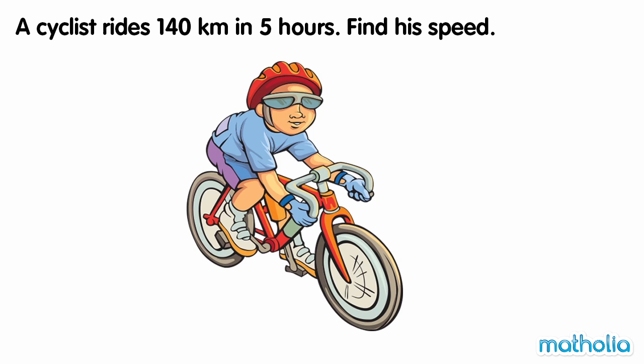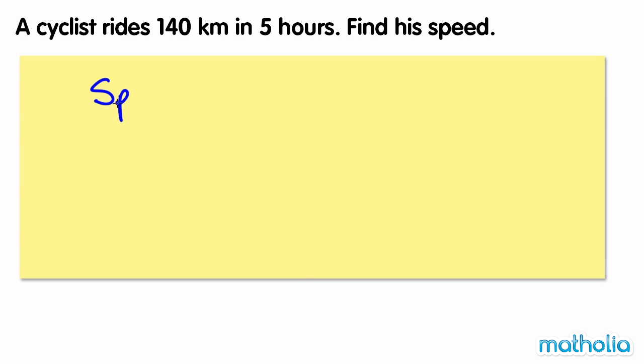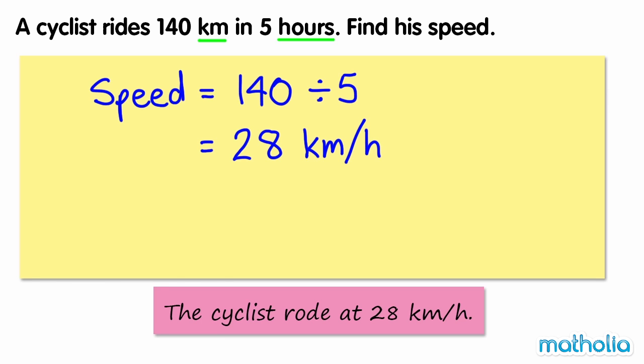A cyclist rides 140 kilometers in 5 hours. Find his speed. 140 divided by 5 equals 28. Our units are kilometers and hours. So the cyclist rode at 28 kilometers per hour.